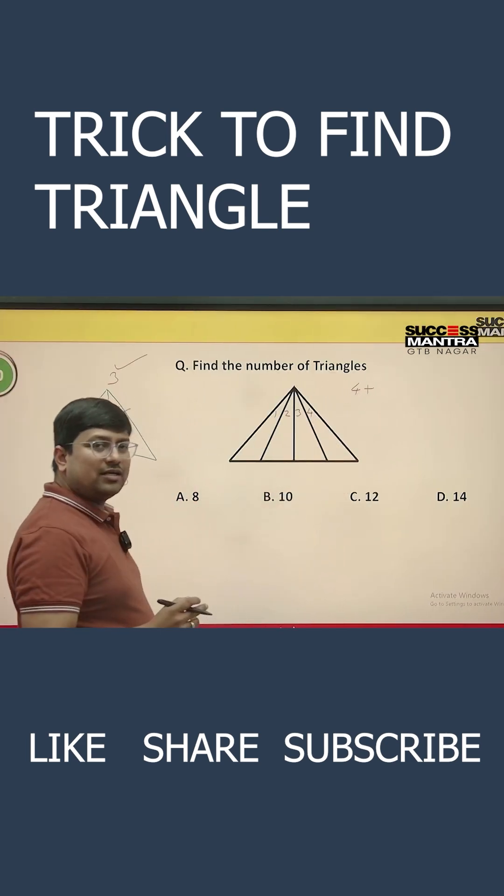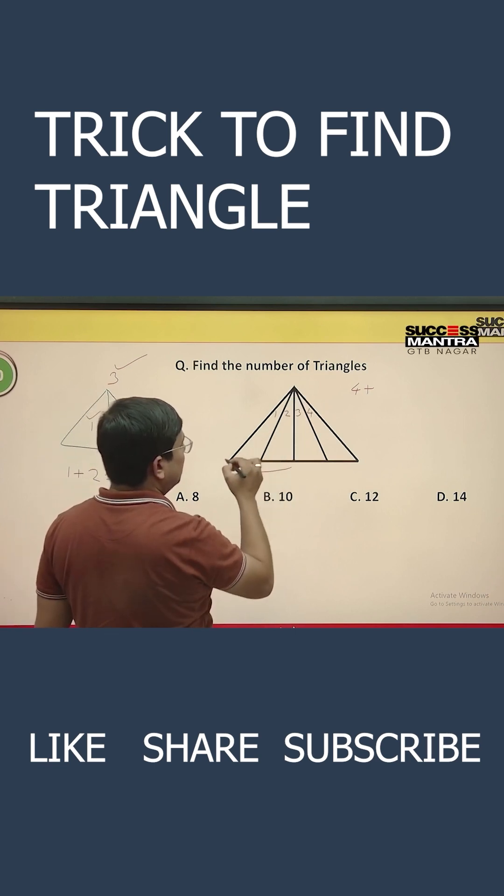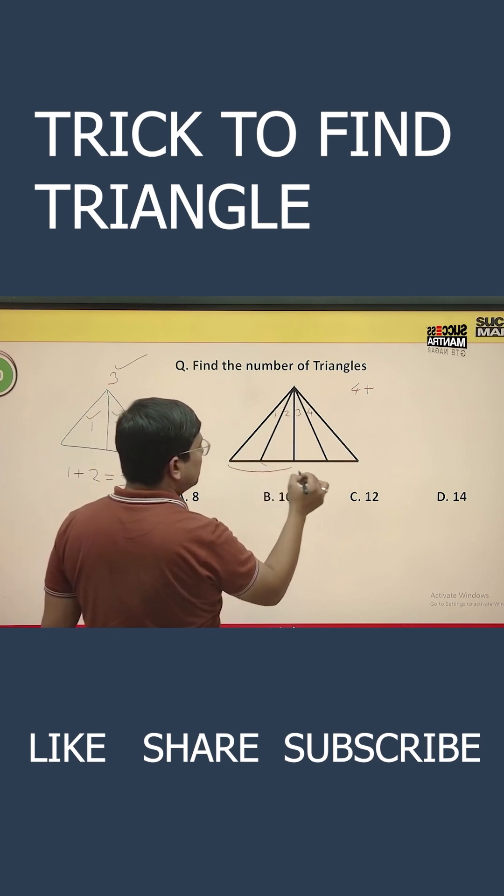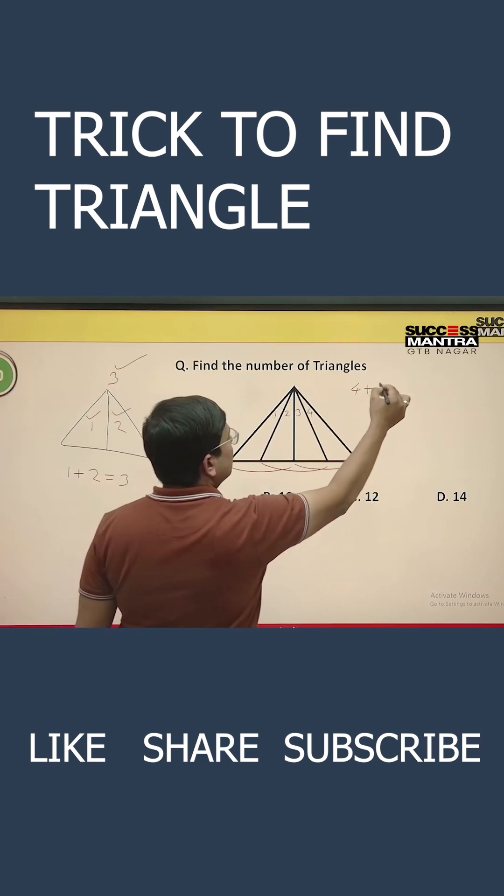Now, let us club two triangles together. So if you club one and two together, this is one triangle. If you club two and three together, this is another triangle. If you club three and four together, this is another triangle. So total three.